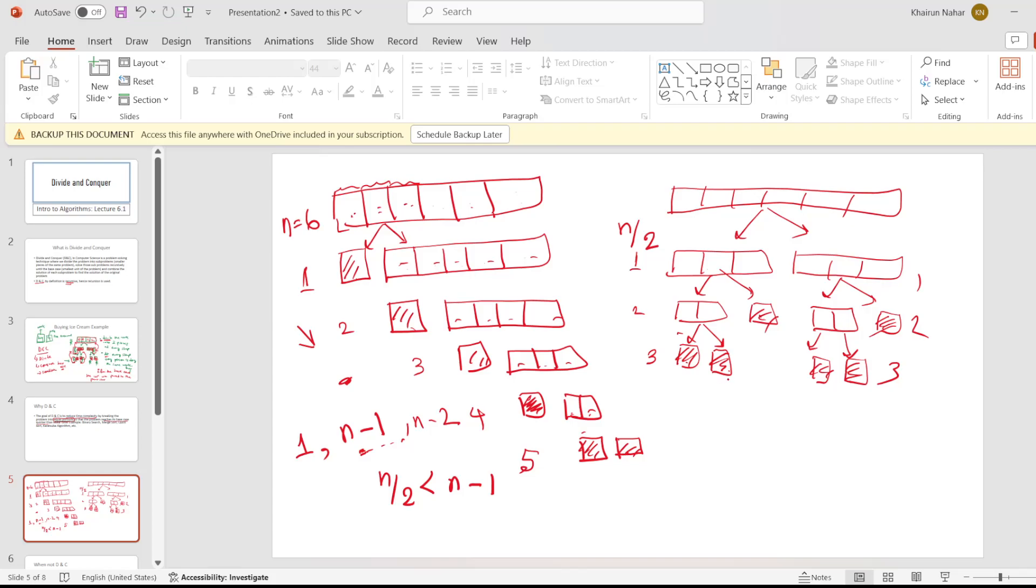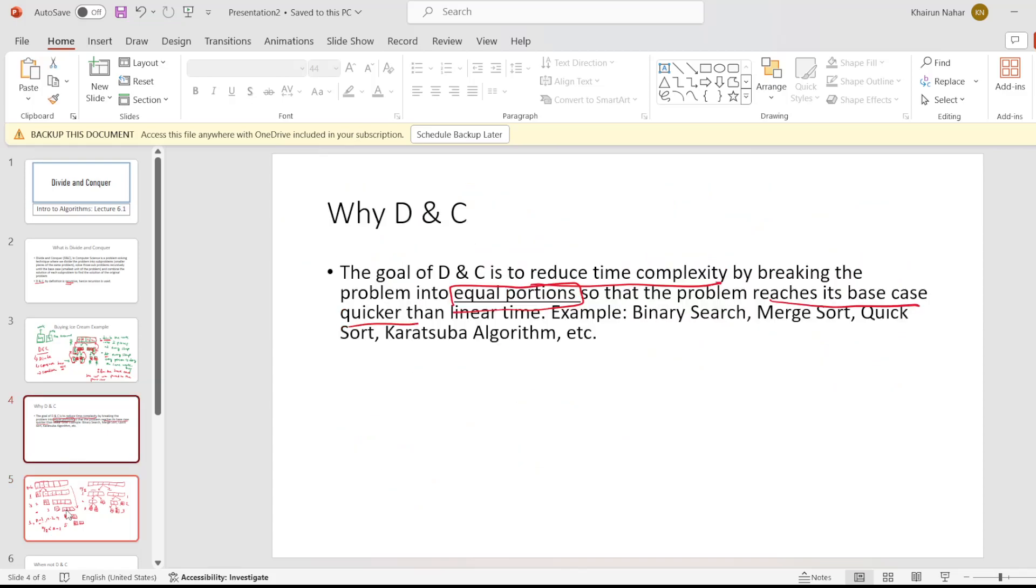So this is the goal of divide and conquer. In divide and conquer, we try to divide a problem into equal portions so that it reaches the base case quicker than breaking it into non-equal portions. We know taking less number of steps will definitely take less amount of time. So this is the goal of divide and conquer.